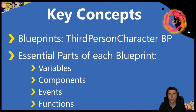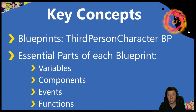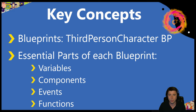Here are the key concepts I want you to take away from today's episode. There are many different kinds of Blueprints, but today we're primarily going to be focused on the third person character. Even though we're focused on this one Blueprint, the four key aspects we're going to cover — variables, components, functions, and events — really apply to every kind of Blueprint. So let's boot up our game and get right into it.